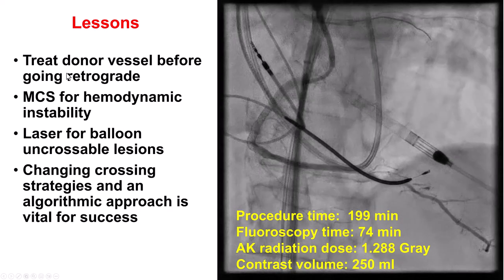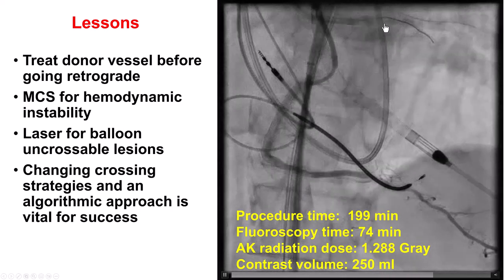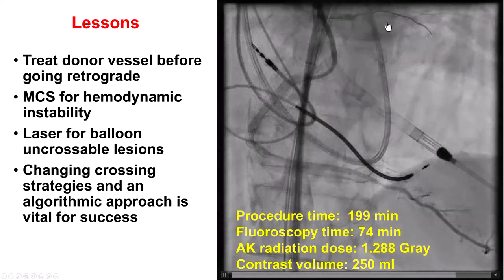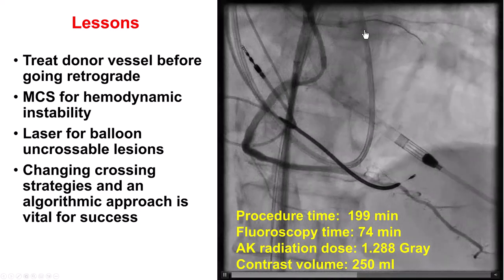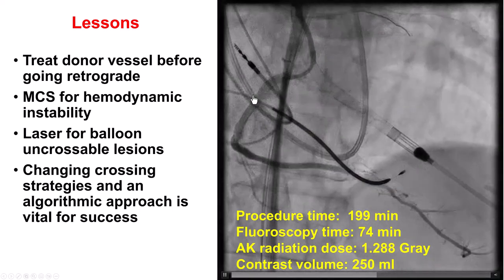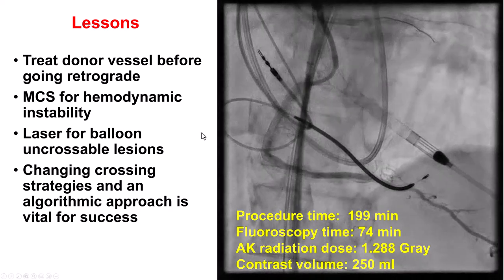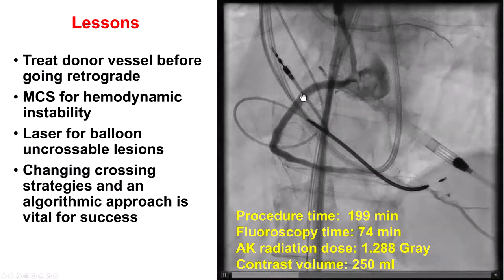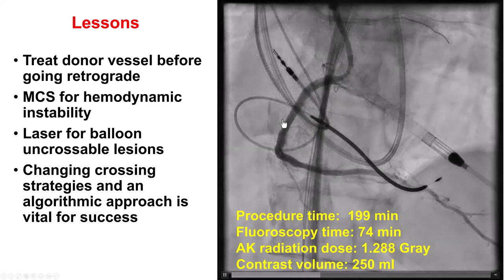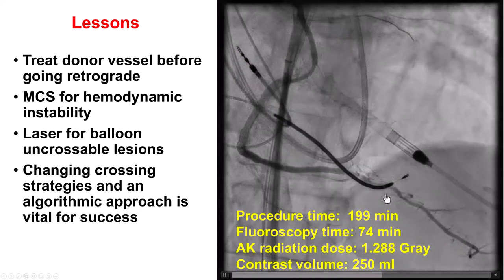Several lessons from this case. First, before going retrograde, if there is disease in the donor vessel, it must be treated first, because advancing equipment through a tight stenosis can cause hemodynamic compromise — in this case, we stented the left main and used hemodynamic support with an Impella. On the antegrade side, we had a balloon-uncrossable lesion treated with sequential strategies: small balloon didn't work, guide extension didn't work, but a 0.9 mm laser did. Finally, sequentially changing strategy from antegrade to retrograde was critical to recanalizing the right coronary artery.